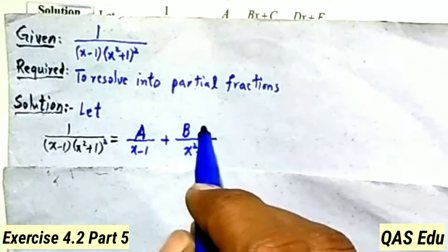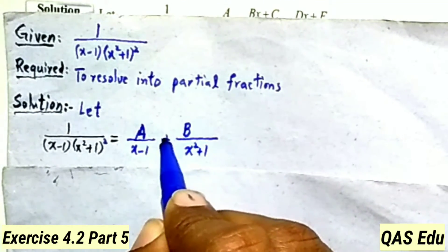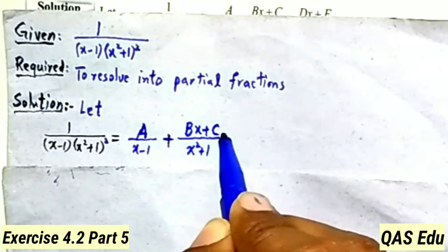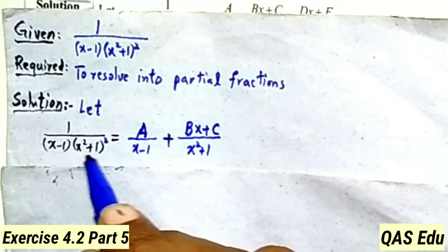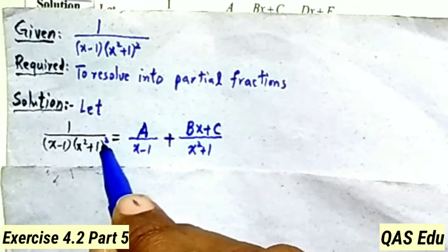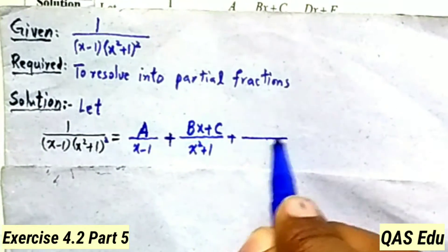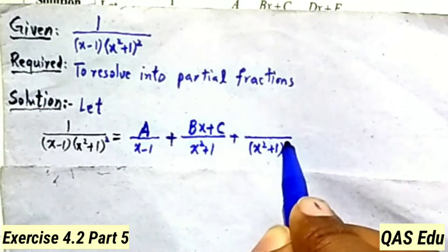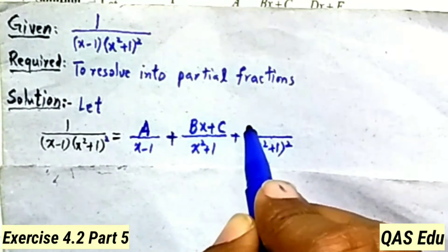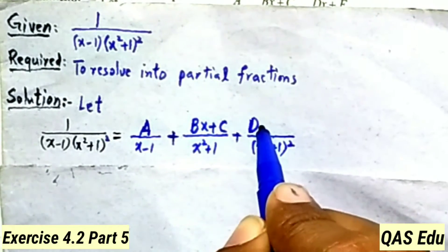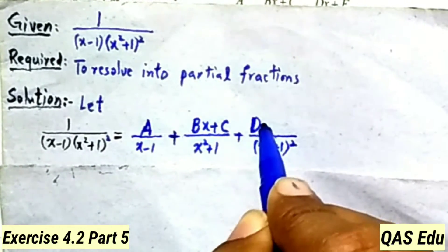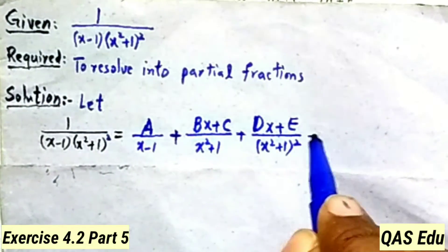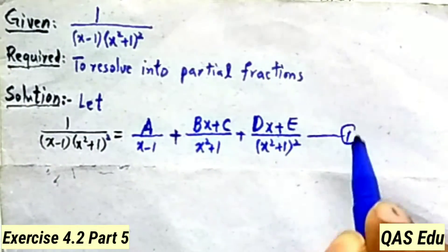For the quadratic factor x square plus 1, which is repeated, the numerator terms will be Bx plus C and Dx plus E. Then this gives us equation number 1.